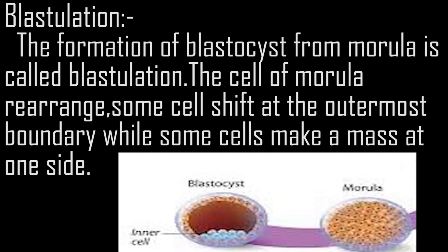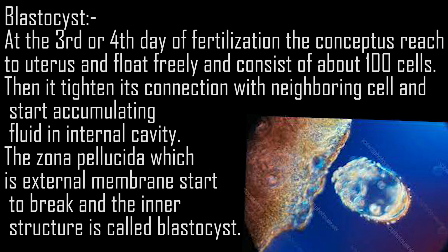Blastulation: The formation of the blastocyst from the morula is called blastulation. The cells of the morula rearrange — some cells shift to the outermost boundary while some make a mass at one side. At the third or fourth day of fertilization, the conceptus reaches the uterus, floats freely, and consists of about 100 cells. It then tightens connections with neighboring cells and begins accumulating fluid in an internal cavity. The zona pellucida, which is the external membrane, starts to break down, and the inner structure is called the blastocyst.